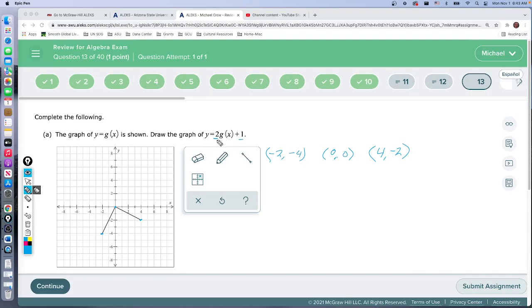Two times the y. We're going to do that to each of the three points. First step, multiply by two. So we get the new point negative two, negative eight. We get the point zero, zero still, because zero times two is still zero. Then we get the point four, negative four.